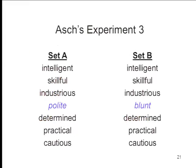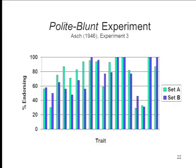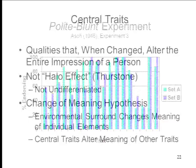Not true that changing any word changes the impression. From Asch's experiment three, the same set of six stimulus words — but the seventh word is now either polite or blunt. When you repeat the experiment with just that change, changing warm to polite and cold to blunt, there's very little difference between the descriptions provided from Set A and Set B. Describing somebody as warm or cold makes a huge difference to the impression of their personality; describing somebody as polite or blunt doesn't make very much difference at all.